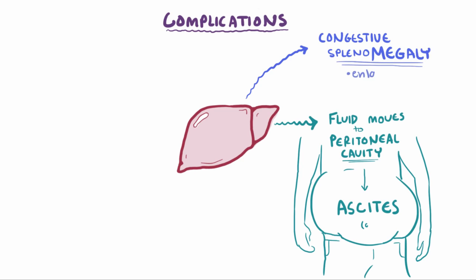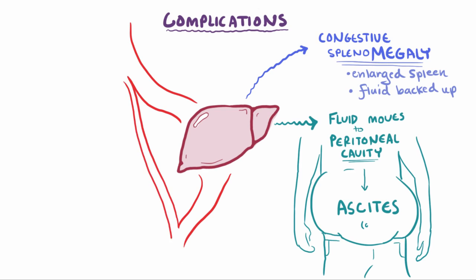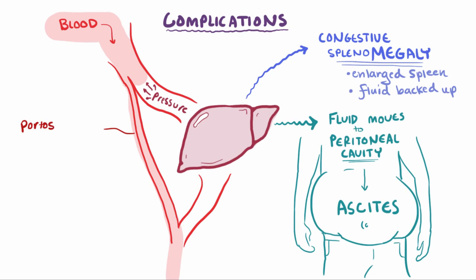Cirrhosis can also result in complications like congestive splenomegaly and hypersplenism, where the spleen becomes enlarged because all the fluid and blood can't get into the liver and backs up into the spleen instead. In the same way, your circulatory system starts diverting blood away from the liver because of the high liver pressures — this is known as a portosystemic shunt. This happens because blood flow follows the path of least resistance, shunting away from the portal system and towards the systemic circulation.